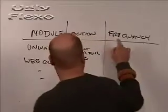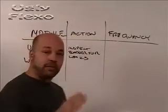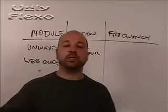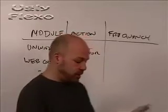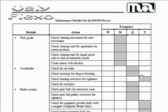Then finally, what you need to do is establish the intervals or frequencies at which you're going to perform these checks at these modules. For example, on their checklist for the 830/910 press, they have frequencies of weekly, monthly, quarterly, and yearly.